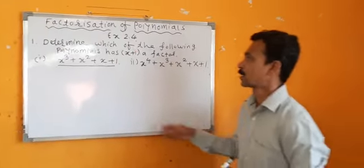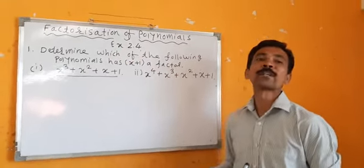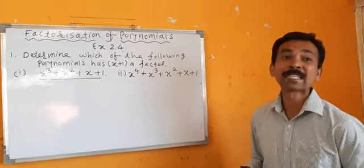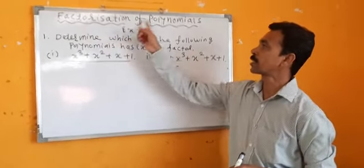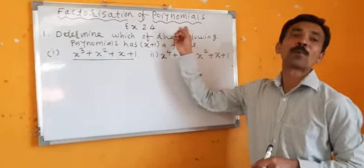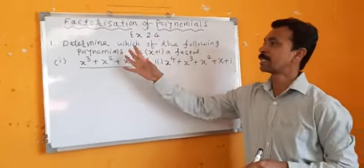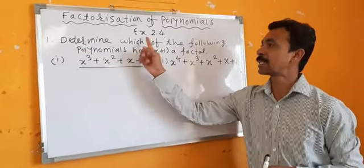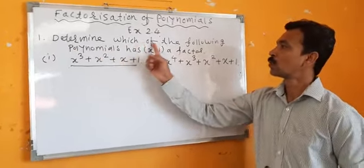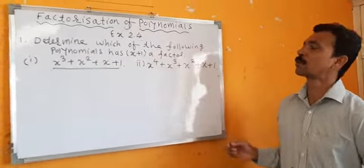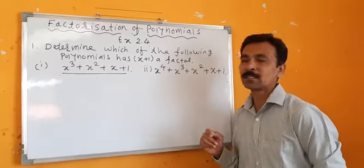Good morning friends. This is exercise 2.4, which comes under the heading Factorization of Polynomials. Now we will see question number 1 of exercise 2.4: Determine which of the following polynomials has x plus 1 as a factor.